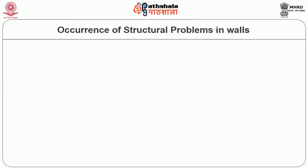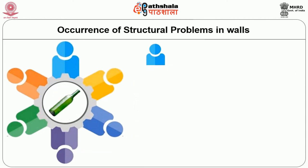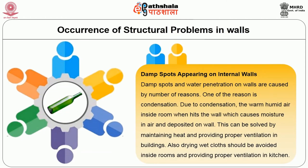Structural problems in walls: Cracks in internal and external walls are mainly due to the failure of foundation. These types of cracks can be filled by branded filler materials. Damp spots appearing on internal walls and water penetration are caused by a number of reasons. One reason is condensation — warm humid air inside a room hits the wall, causing moisture to deposit on the wall. This can be solved by maintaining heat and providing proper ventilation in buildings.